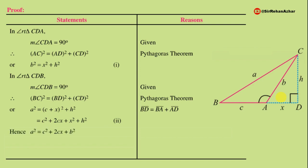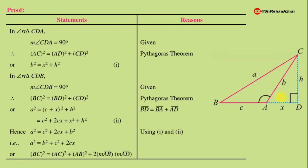Substituting b² in place of x² + h², using equations (1) and (2): a² = c² + 2cx + b². Rearranging: a² = b² + c² + 2cx. Replacing variables back: BC² = AC² + AB² + 2·AB·AD. Hence, the relation is proved.